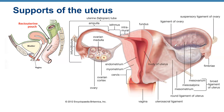Additional ligaments include the ovarian ligament, which connects the ovary to the lateral wall of the uterus, the uterosacral ligament connecting the uterus to the posterior wall, and the round ligament.